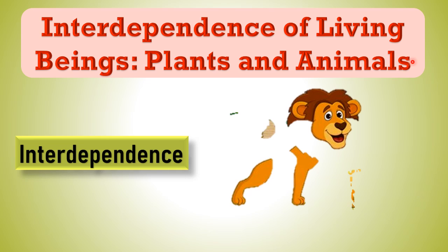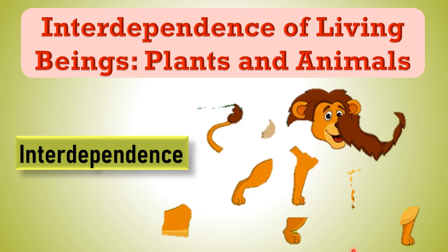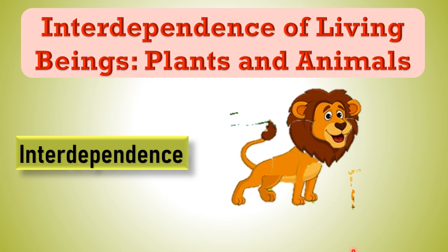Children, tell me what you can see on the screen. You can see an incomplete picture of a lion. So what do we need to complete this picture? We need the missing parts of the body. We have to fix these missing parts at the right place to complete this picture. When the parts are fixed at the right place, then you can see a complete lion.